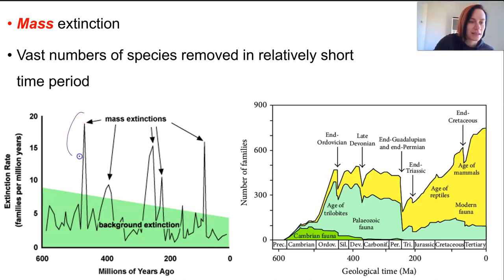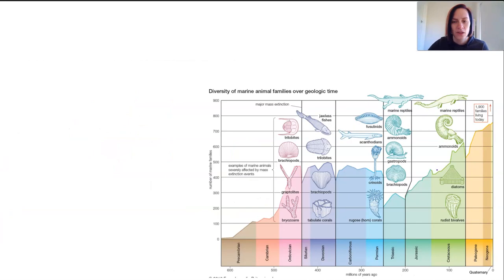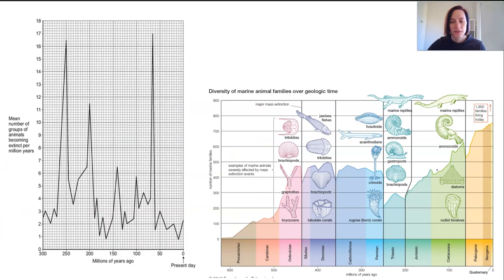We can see this mass extinction situation in these graphs where it says extinction rate has significantly increased, and you can see the spikes in that graph. You can also see it here where it's got number of families where suddenly the numbers of families drop really quickly in a short period of time. If you look at these diagrams graphing time and variation, we can see where that occurs again. Here we've got the mean number of animals becoming extinct and you can look for the spikes, whereas here you've got the number of marine families, so you have to look for the drastic drops.